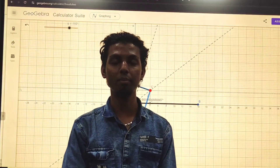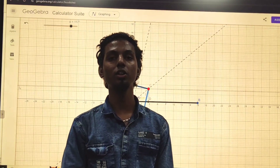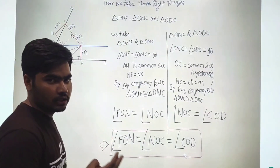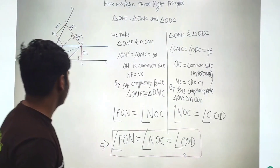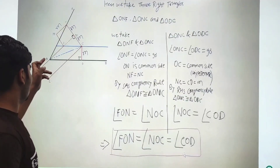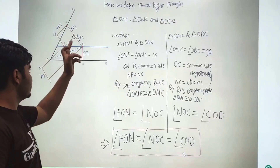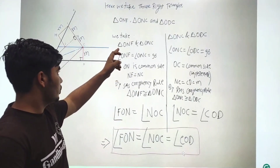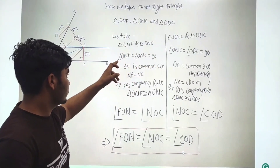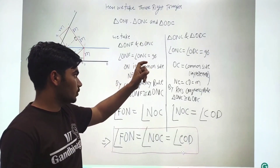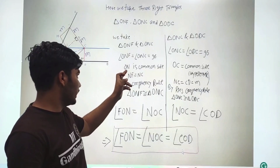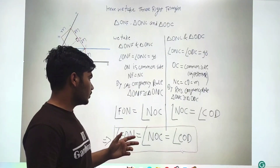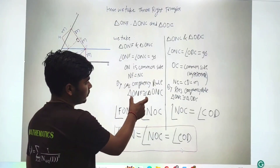Now my friend Shivam will explain the mathematical concept behind the trisection of the angle using the carpenter square, and also show that the trisected angles are equal. We take three right triangles: ONF, ONC, and ODC. Considering triangles ONF and ONC: angle ONF equals angle ONC, both equal to 90 degrees. Side ON is common, and side NF equals NC. By the RHS congruency rule, both triangles are congruent to each other.